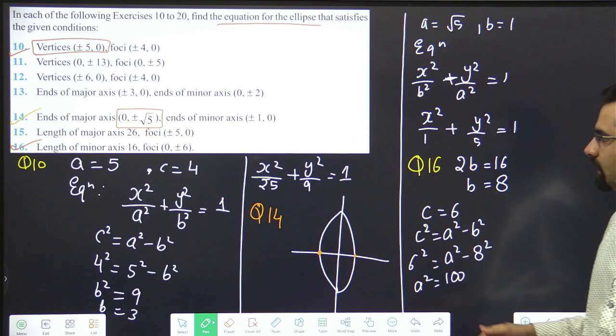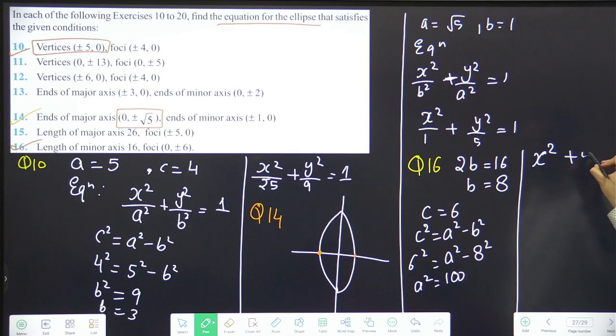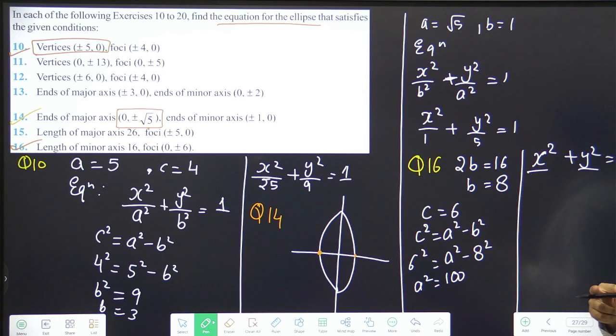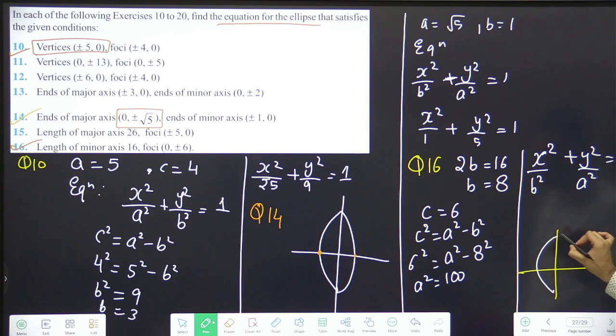Equation is x square plus y square equals 1. Now question is where is a and where is b? Foci is given. Foci means main one is where? On y axis. x square by 64 plus y square by 100 equals 1.